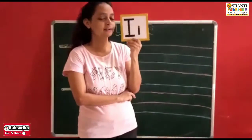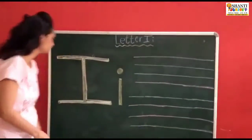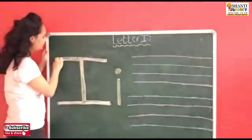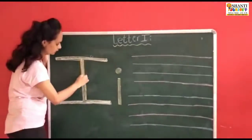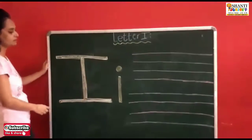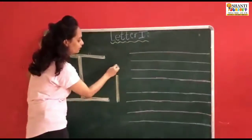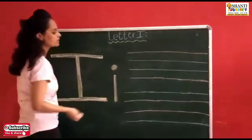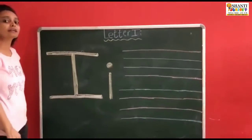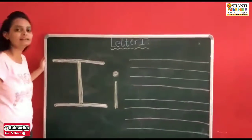So this is the letter I we are going to learn. How are we going to write it? Sleeping line, standing line, and sleeping line — it becomes letter I. And small letter I: standing line and one dot — it becomes letter I. I for iron, I for igloo, I for ice cream — all of these start with letter I.